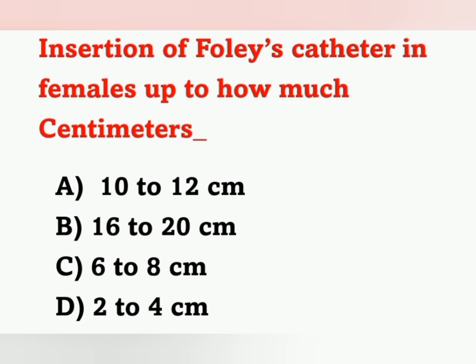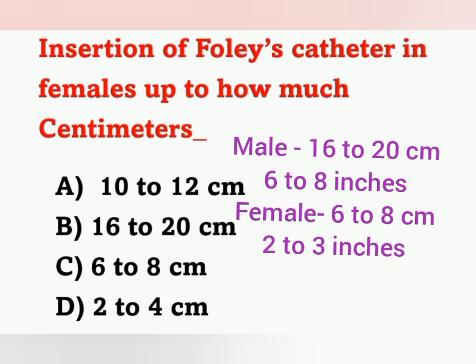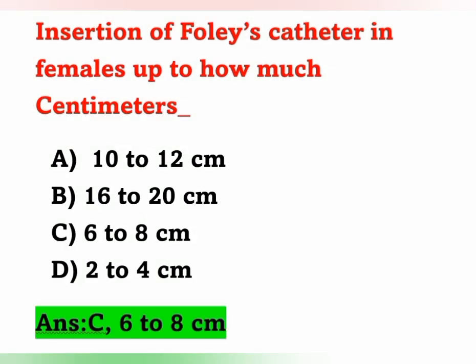Next question: Insertion of Foley catheter in females up to how many centimeters? Options: A) 10 to 12 cm, B) 16 to 20 cm, C) 6 to 8 cm, D) 2 to 4 cm. In females, the Foley catheter should be inserted 6 to 8 centimeters (2 to 3 inches). In males, it is inserted 16 to 20 centimeters (6 to 8 inches). The correct answer is 6 to 8 centimeters — Option C.